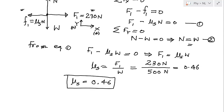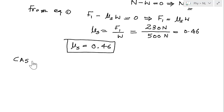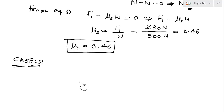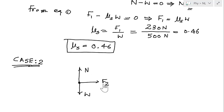Now we consider Case 2: the crate is moving with constant velocity. The sum of forces is again zero, so we can still apply Newton's first law. The only difference is that the friction force is now kinetic, not static, because the crate is moving. Drawing the free body diagram: weight acts downward, normal reaction acts upward, applied force F2 is 200 Newton horizontally, and the kinetic friction force f2 equals μk times N acts in the opposite direction.